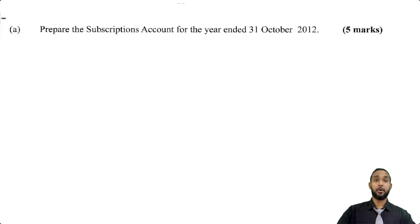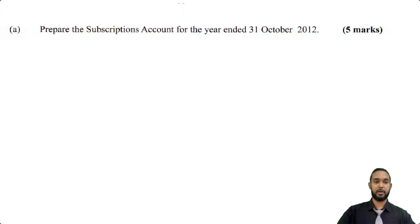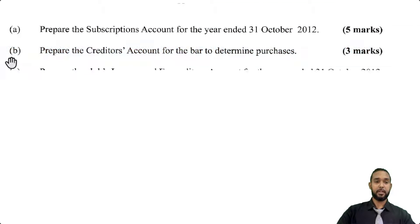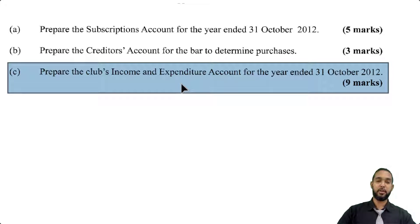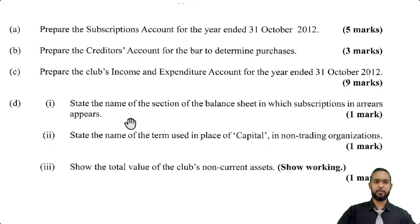The question asks us to: first, prepare the subscriptions account for the year ended 31st October 2012 for five marks; second, prepare the creditors account for bar purchases; third, prepare the club's income and expenditure account for the year ended 31st October 2012. The income and expenditure account is their version of the income statement, but it will look a little different. There are also some short theory questions. Let's get the subscriptions account going.